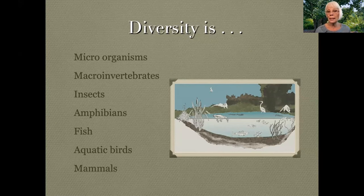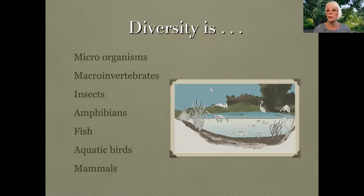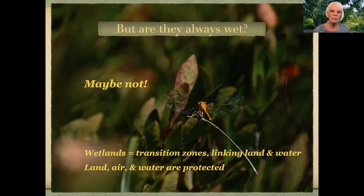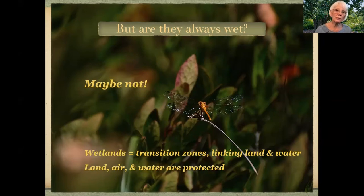One third of threatened and endangered species live only in wetlands — wetlands are critical for their survival. But are wetlands always wet? Nope, not always. There are wetlands called ephemeral or isolated — they don't have any downstream outlet. They might be a low spot in a farm field. In spring, snowmelt finds those depressions, and then come the spring rains to add more water. We might see a duck floating around there. What really gets excited about those little wetlands are the frogs and toads.